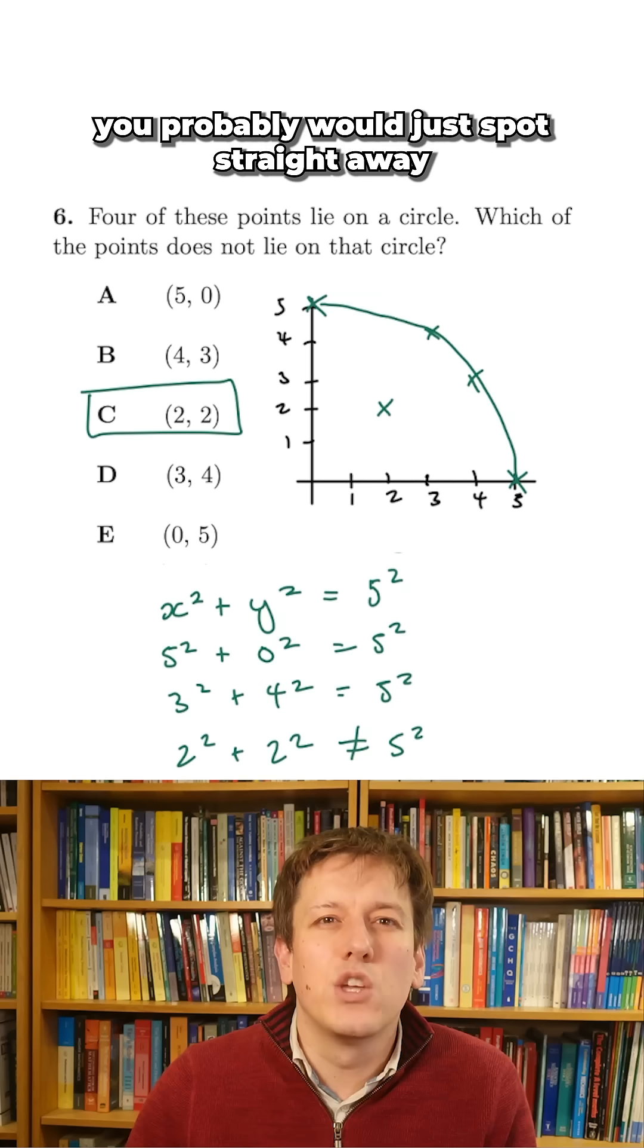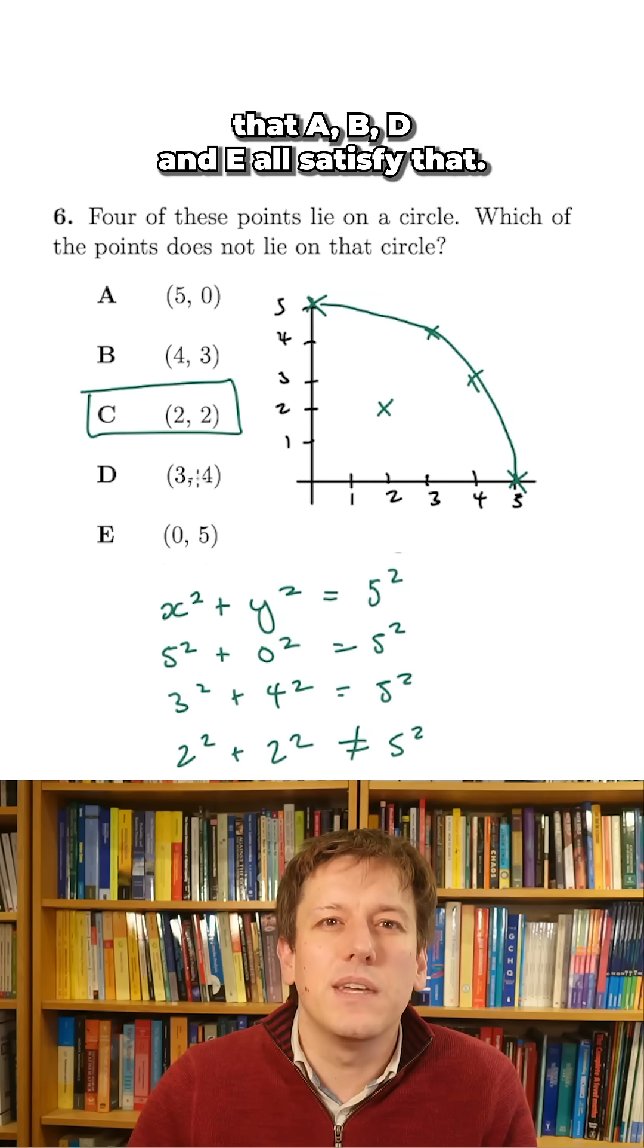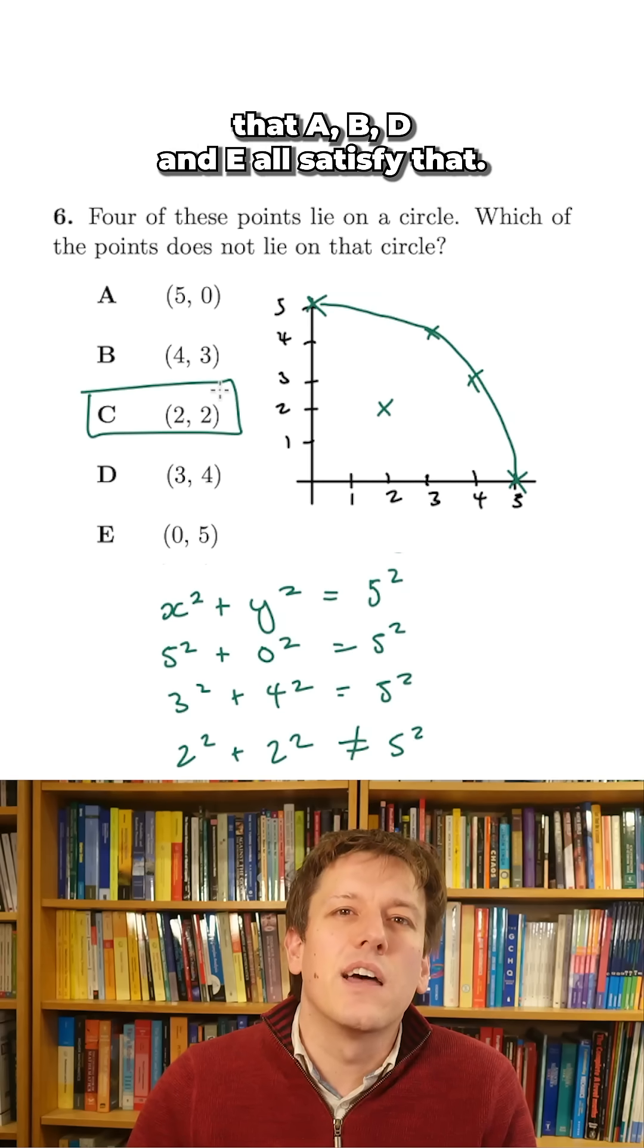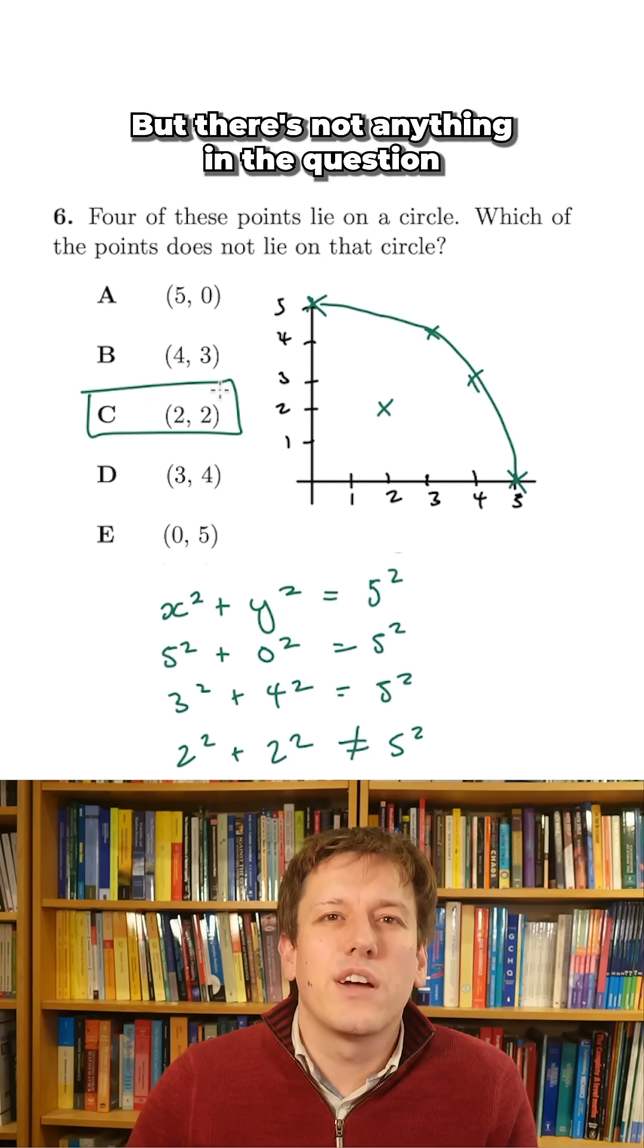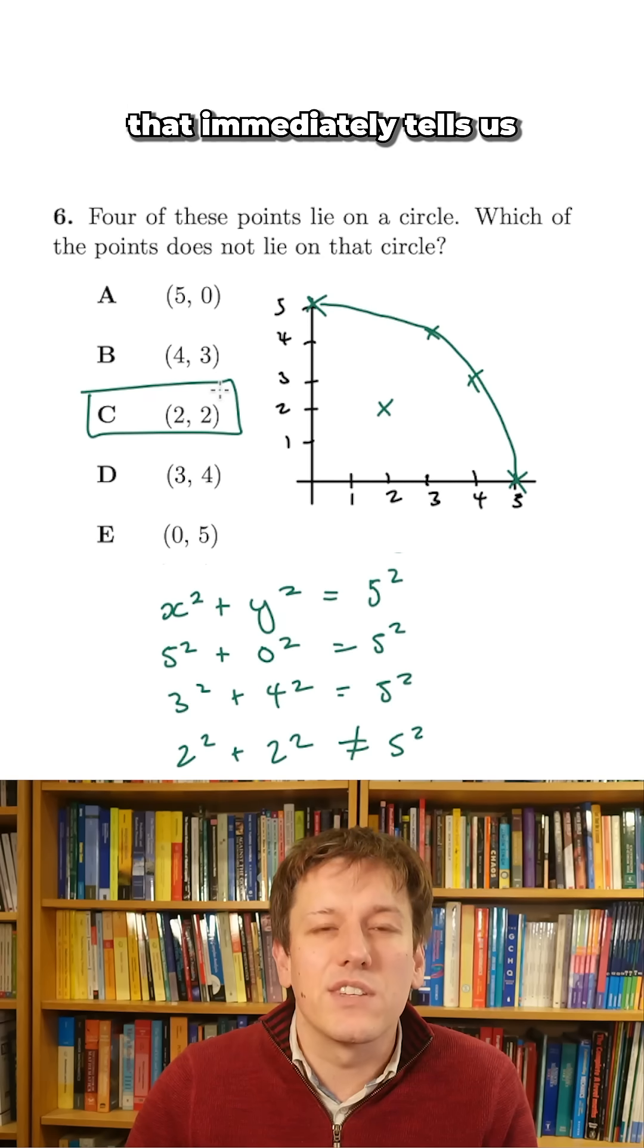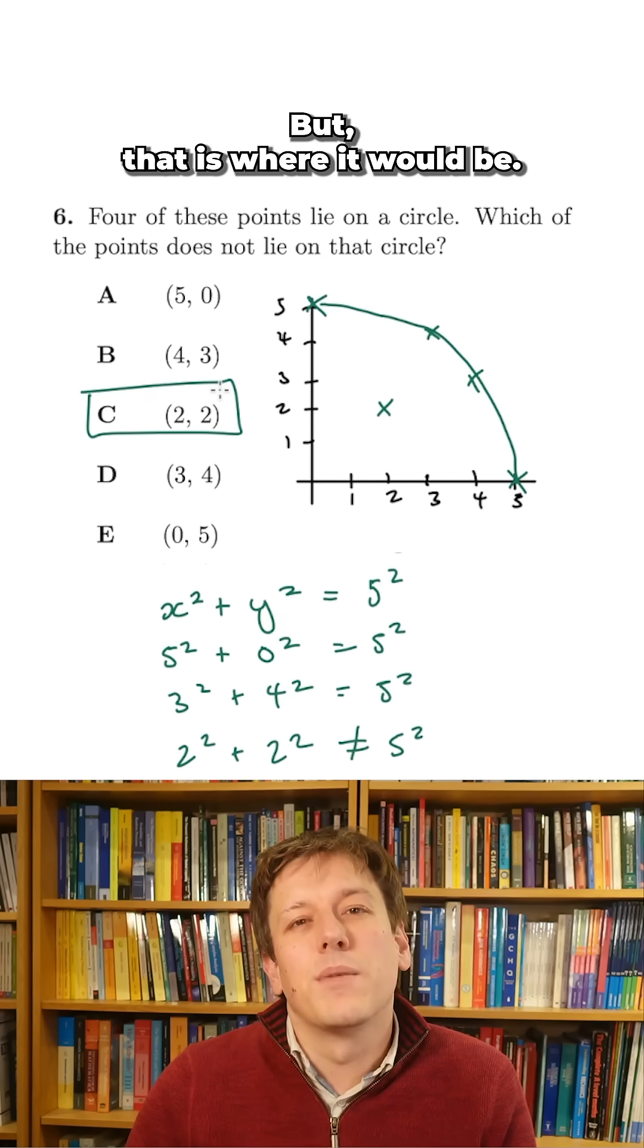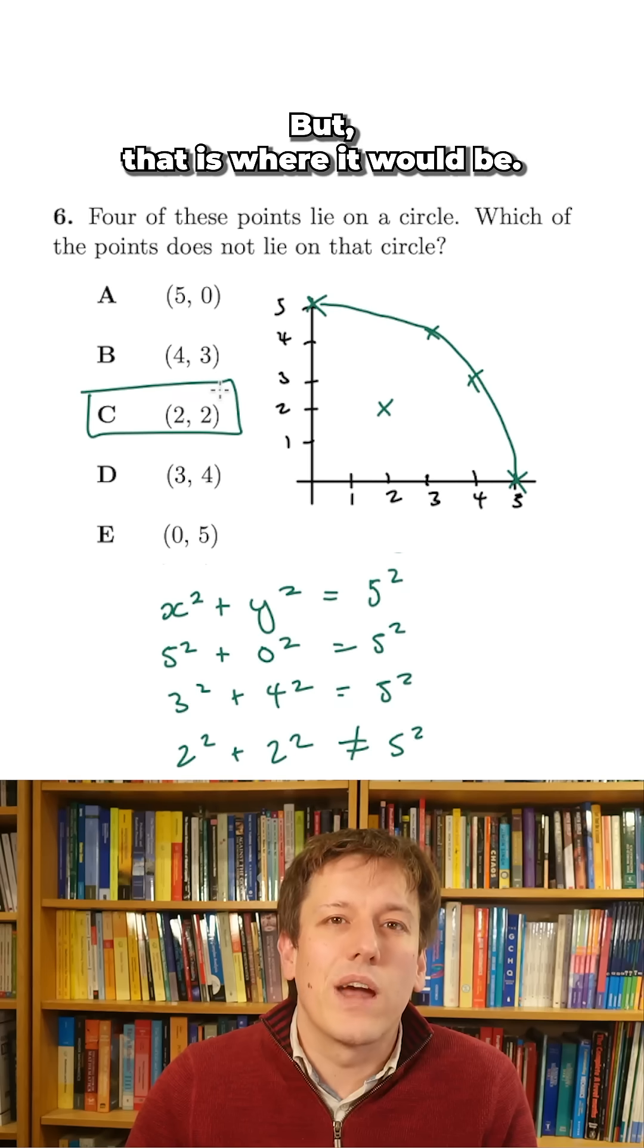So with some experience here, you probably would just spot straight away that A, B, D, and E all satisfy that, and that it must be a circle centered at the origin. But there's not anything in the question that immediately tells us that it's centered at the origin, but that is where it would be.